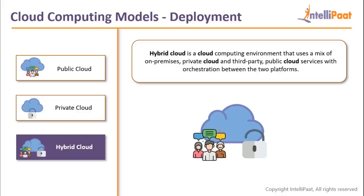To summarize deployment models: public cloud — servers owned by the cloud provider and shared between multiple clients. Private cloud — either a separate isolated server stack from your cloud provider, or your own servers in a data center. Hybrid cloud — a combination where you use some servers from public cloud and some from private cloud.